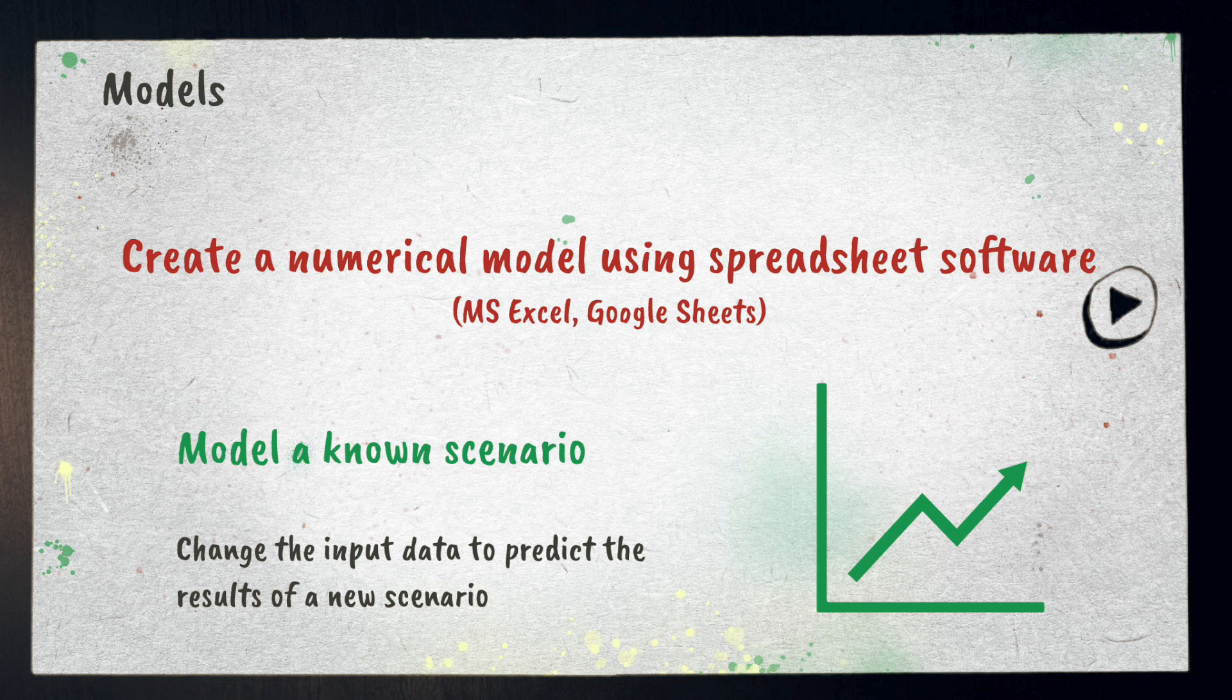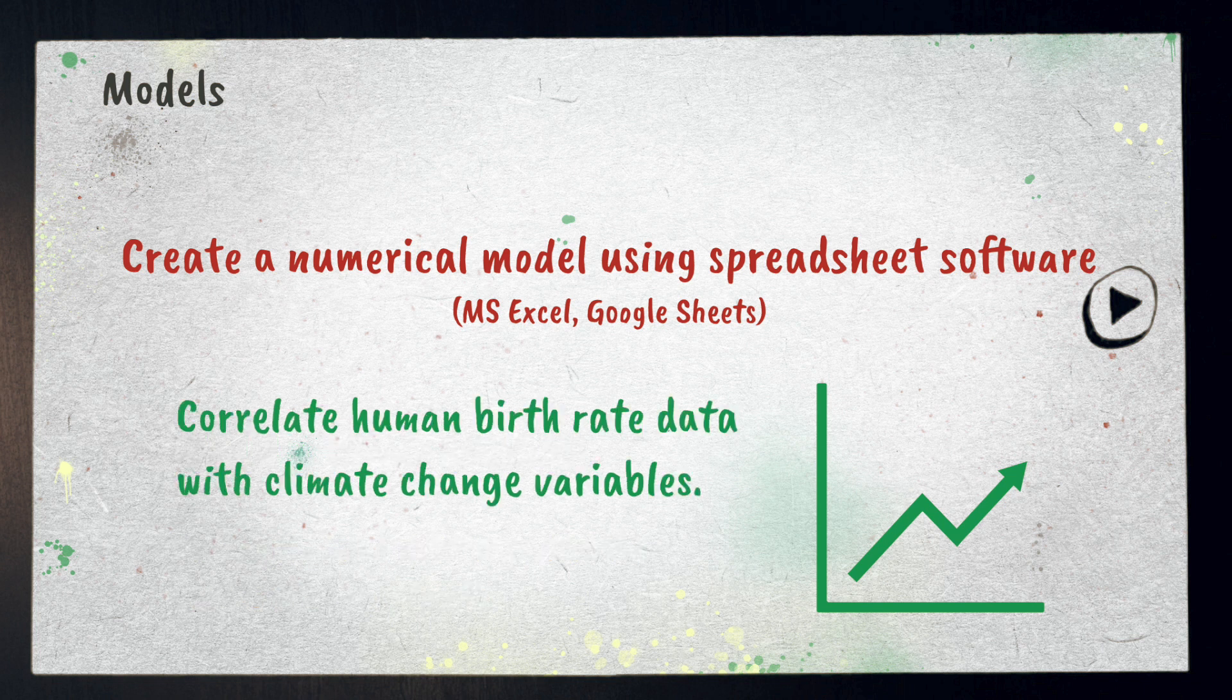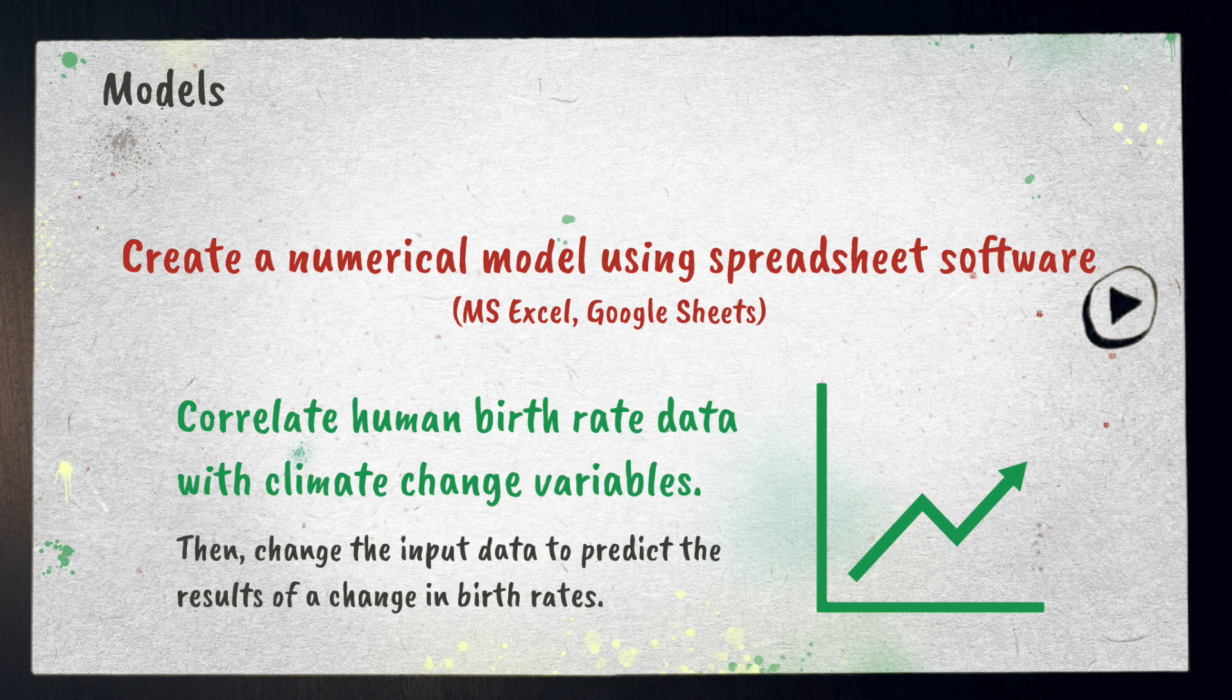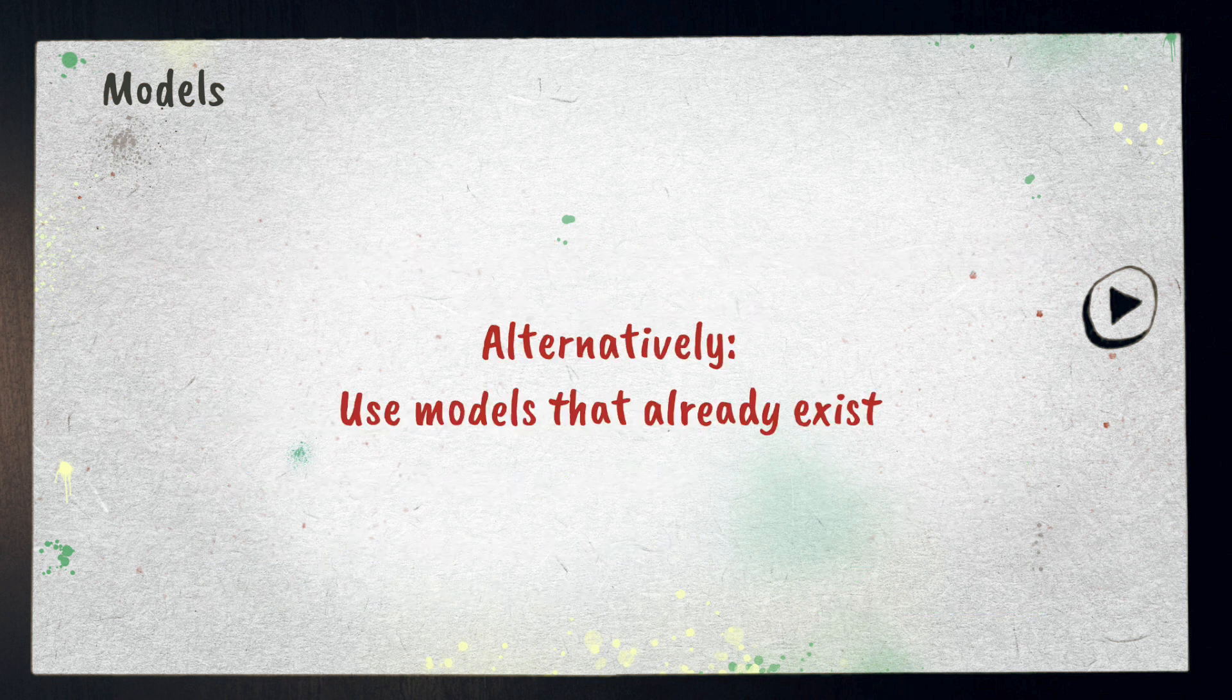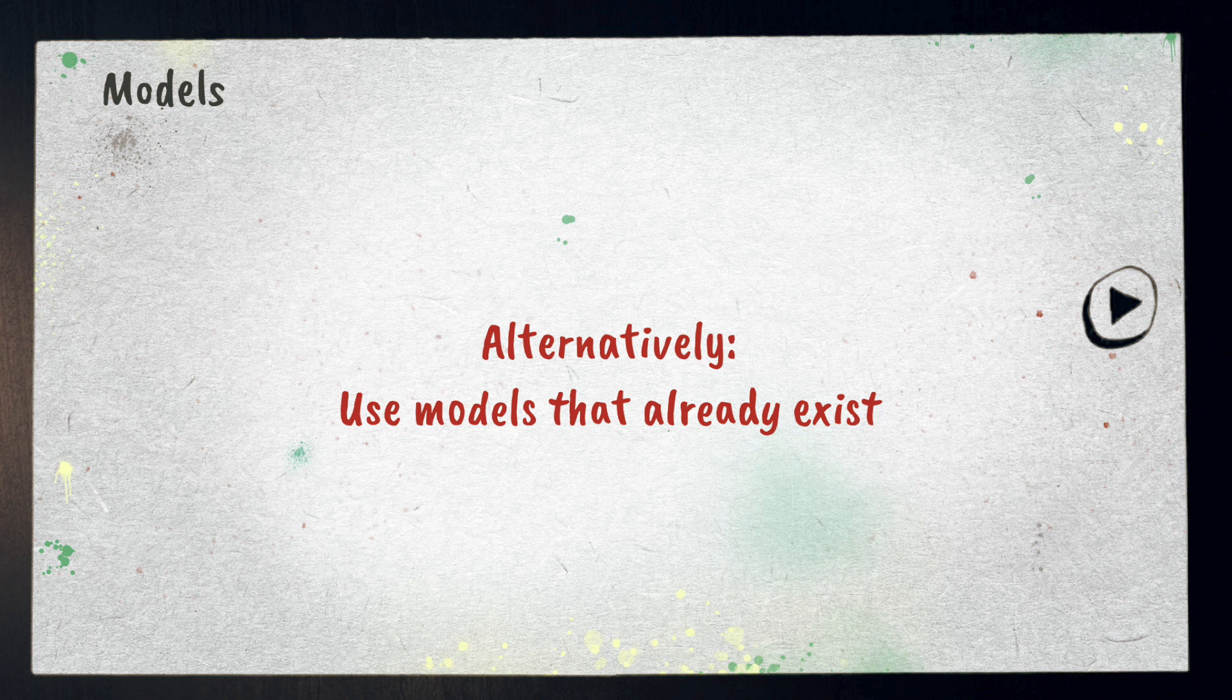For example you could correlate human birth rate data with climate change variables then change the input data to predict the results of a change in birth rates. Alternatively you could find models that already exist and use them to collect your data based on the variables you input.